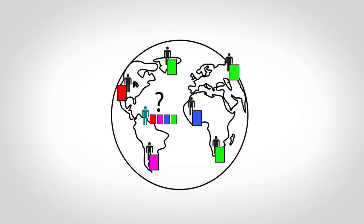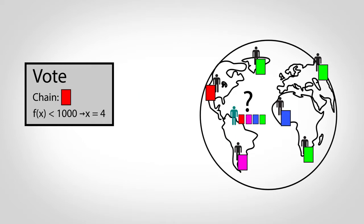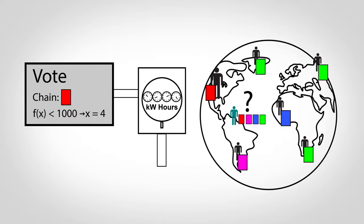Ideally, you would trust the one that the majority of people are using, but determining this on the internet is difficult. What would stop a single person from voting millions of times? Bitcoin prevents this by requiring people to solve math problems to vote. This causes each vote to have a cost in computing power, making it unlikely that a single person or group could ever afford to outvote or outcompute the majority of users.